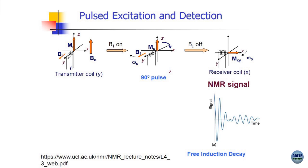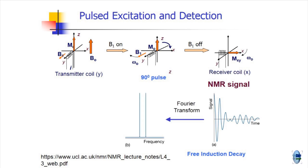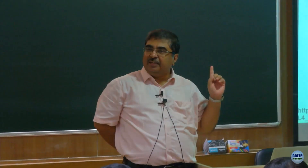If I do a Fourier transform of the FID, I get the frequency domain spectrum. What is shown here is actually an FID for a mixture of two frequencies — equal contribution — so it is an interferogram, but a damped interferogram because the bulk magnetization vector is returning to the Z direction. That is how NMR spectroscopy works and how NMR data are recorded.